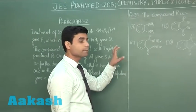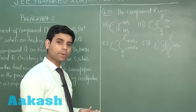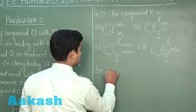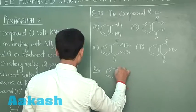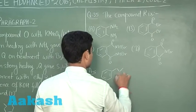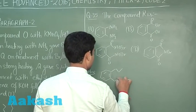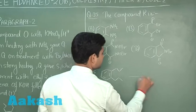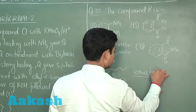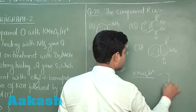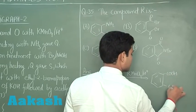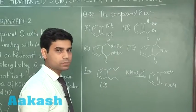Question number 35 asks: what is compound R? Let us form compound R. We have compound O. When O reacts with KMnO4 in acidic medium, it gives a dicarboxylic acid — phthalic acid. The CHO group is present at both positions.